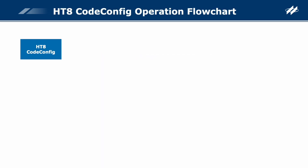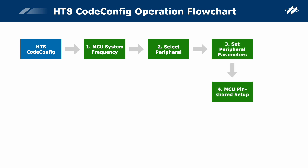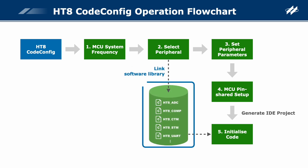The HT8 CodeConfig operation flowchart has mainly five steps: 1. Set the MCU system frequency; 2. Select the peripherals required for the project; 3. Set parameters for the selected peripherals; 4. Set the MCU pin-shared functions; 5. Execute Generate IDE Project.